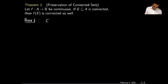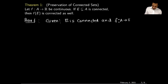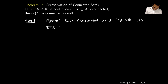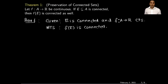What is given: E is connected, and f is a function from A to the reals that is continuous. What we want to show: f(E) is a connected set. We will prove this result using the method of contradiction.